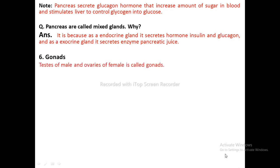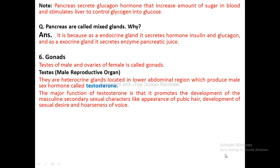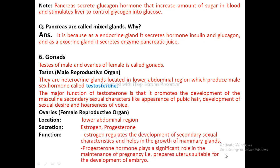Gonads: Testes of males and ovaries of females are called gonads. Testes — male reproductive organ, a heterocrine gland located in the lower abdominal region, produces male sex hormone testosterone. Function: promotes development of muscles and secondary sexual characteristics like pubic hair, sexual desire, and hoarseness of voice. Ovaries — female reproductive organ, located in the lower abdominal region, secretes estrogen and progesterone. Estrogen regulates development of secondary sexual characteristics and helps in growth of mammary glands. Progesterone plays a significant role in maintenance of pregnancy and prepares the uterus for development of the embryo.